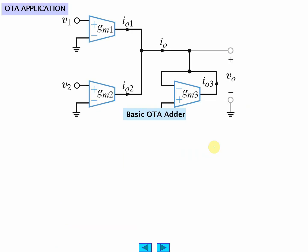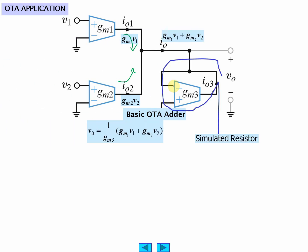This is an adder. This current, this current adds to this current, so you have GM V1 plus GM V2 gets IO, and this is your resistor, this is your simulated resistor. So the output is going to be the simulated resistance times the current. So it's an adder or a multiplier and an adder.